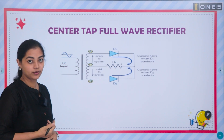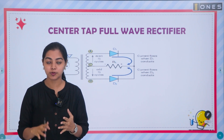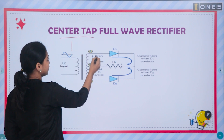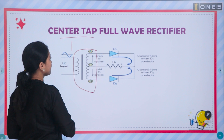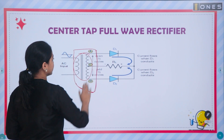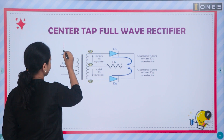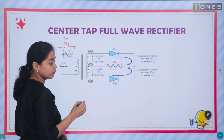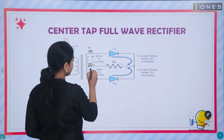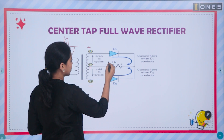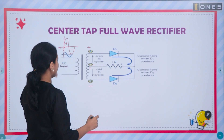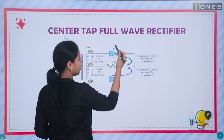Next is the center-tap full-wave rectifier. The full-wave rectifier is classified as center-tap and bridge, based on construction. Let's see the center-tap full-wave rectifier. We have to consider the transformer with a center tap. This is the center-tap full-wave rectifier. We have to consider positive half and negative half. If we consider the half-wave rectifier, it has a single diode. The center-tap full-wave rectifier has two diodes: D1 and D2.